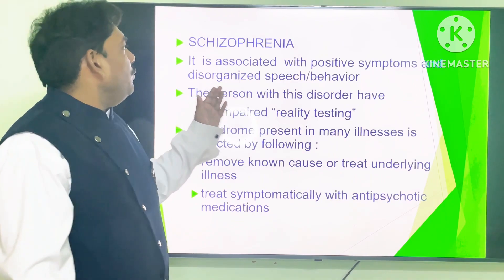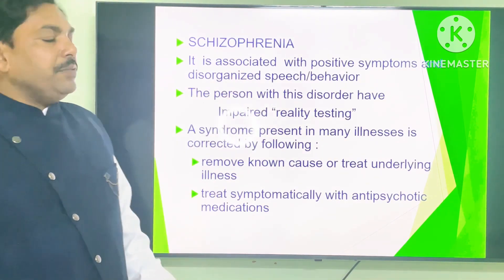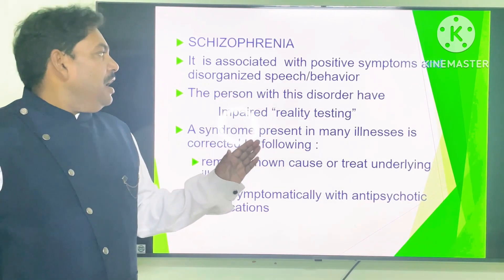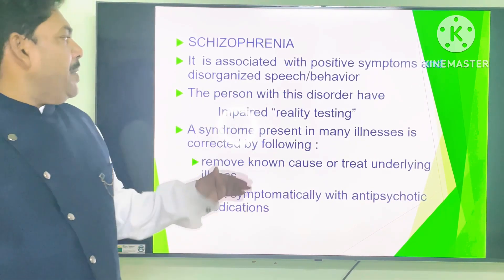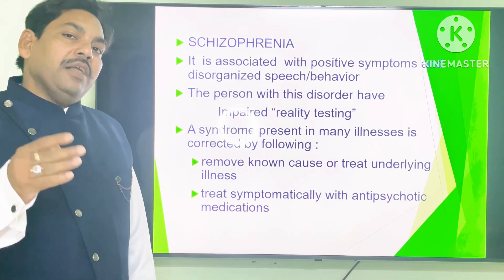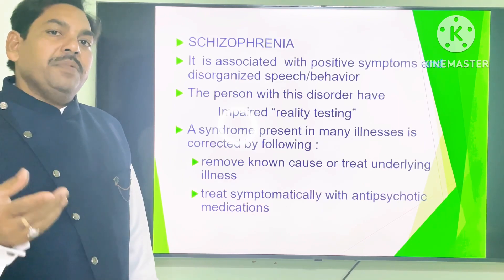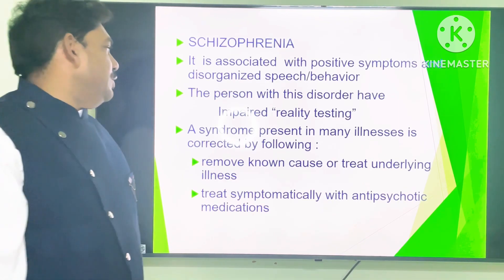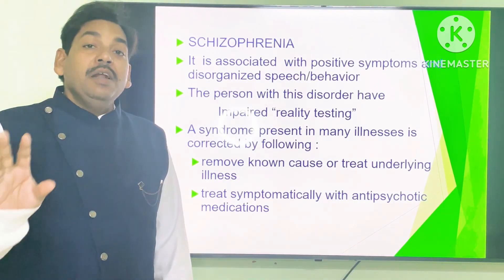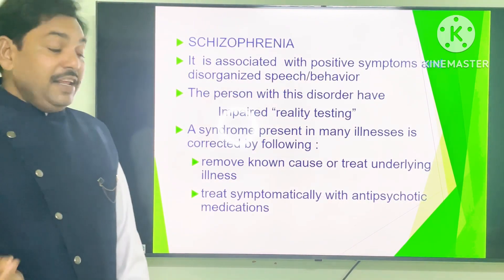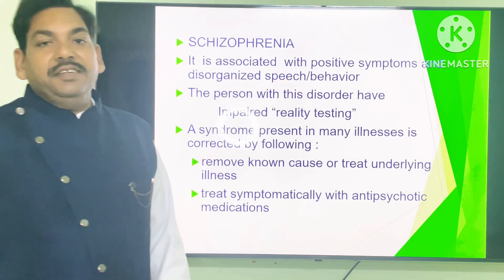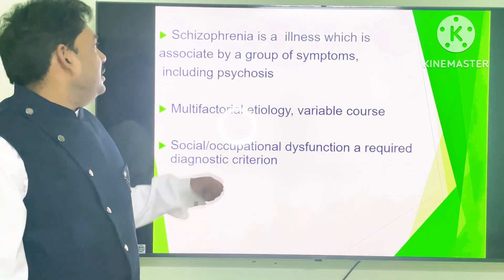The schizophrenia positive symptoms include disorientation of speech and behavior, and impairment of reality testing. The person has a false perception of reality. The syndrome may be corrected by removing the cause or by treating the illness with anti-psychotic medicine.